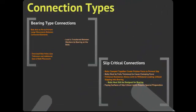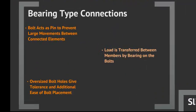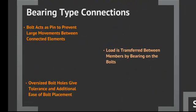One type of connection is a bearing type connection. The bolts act as a pin to prevent large movements between connected elements. Load is transferred between members by bearing on the bolts. Oversized bolt holes give tolerance and additional ease of bolt placement.